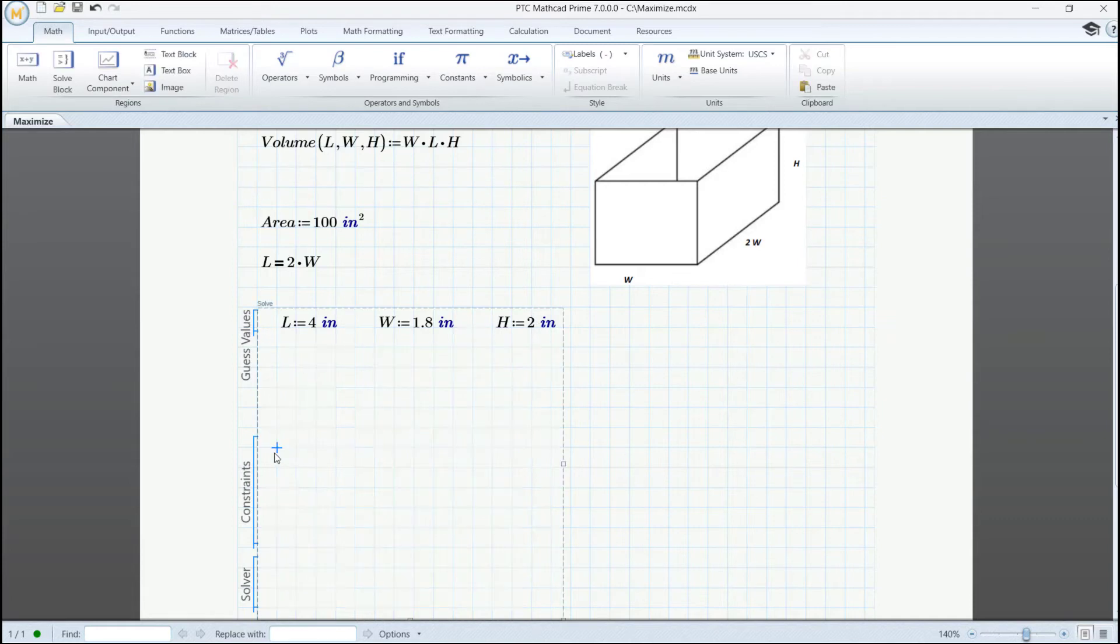We can directly move our constraints in the solve block. And we can also safely assume that we won't have any negative values. So we're going to also mention this in the solve block in the constraints section.